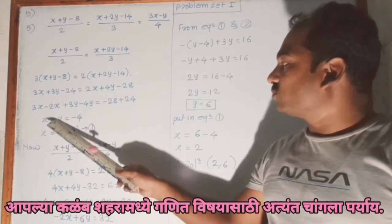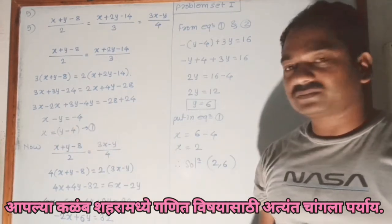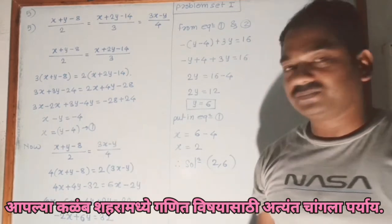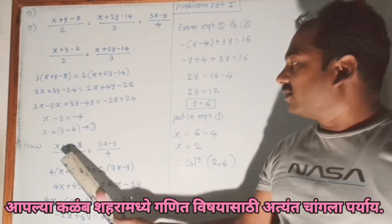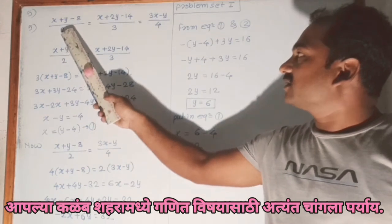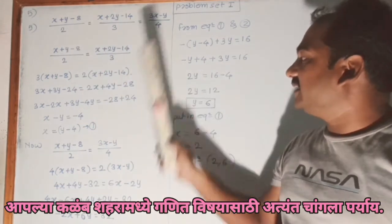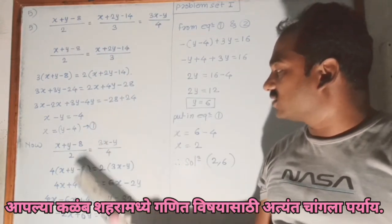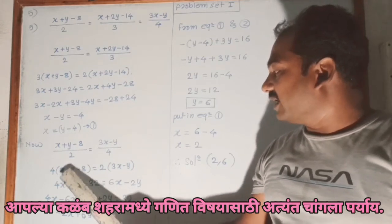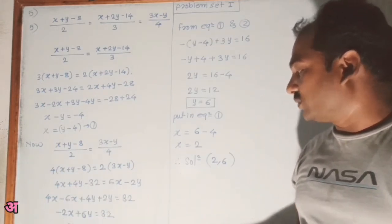We shift y and get equation number 1. Now after this, we equate the first side and last side. We do cross multiplication and get equation number 2.